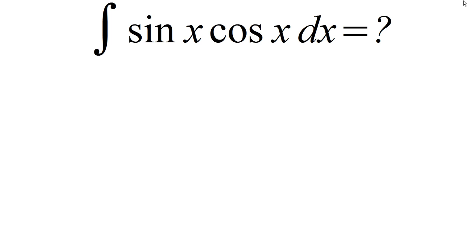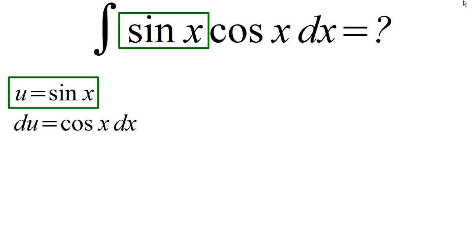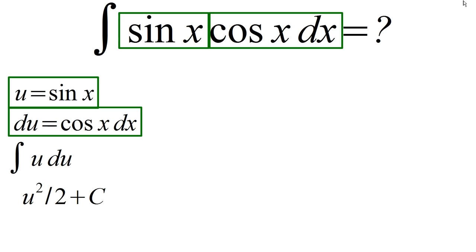One method of attack is to do a u-substitution where u equals sine x. du equals cosine x and we end up with the integral of u du. This becomes one half u squared plus an arbitrary constant. Substituting back in for u, we get the answer sine squared x over two plus an arbitrary constant.